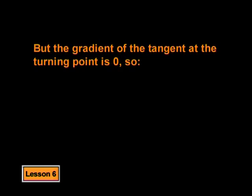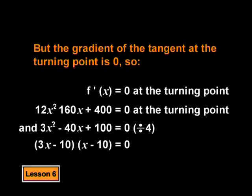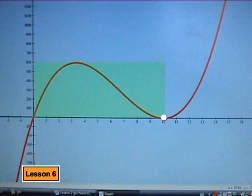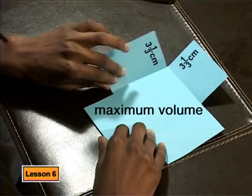We have been saying that the gradient of the tangent at the turning point is 0. So setting v dashed of x equal to 0 gives a quadratic equal to 0, which I must solve. That says either x equals 10 divided by 3 or x equals 10 — two turning points. Looking at the graph, there is a turning point at 10 but it's not the one we're interested in. The other turning point is x equals 10 divided by 3, a little more than 3. We found that when we cut out a square of 3 and one third centimeters, the volume of the box will be a maximum. So if we make the side 3 and one third centimeters, we'll get the biggest possible box. That's right.